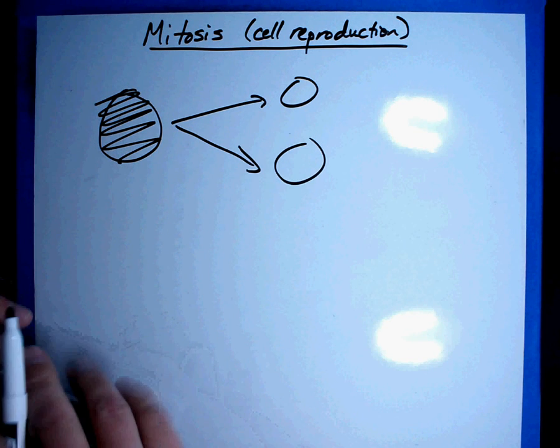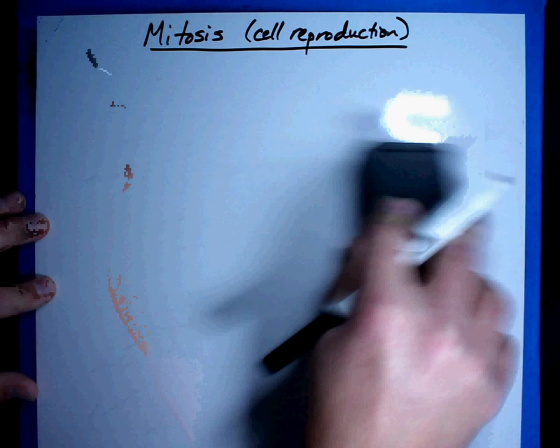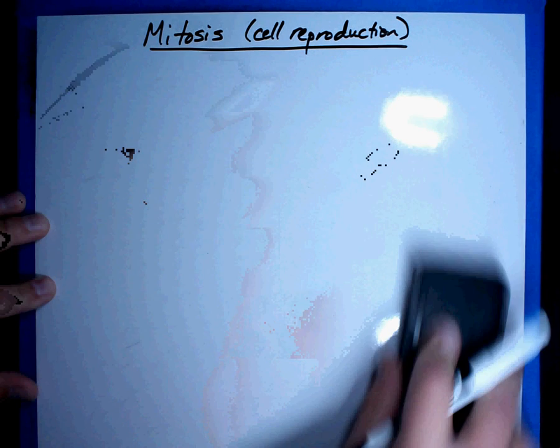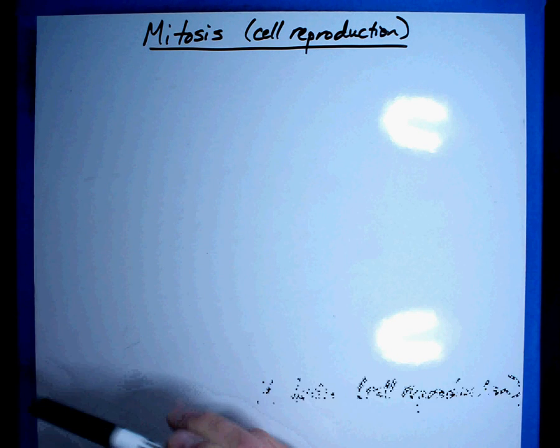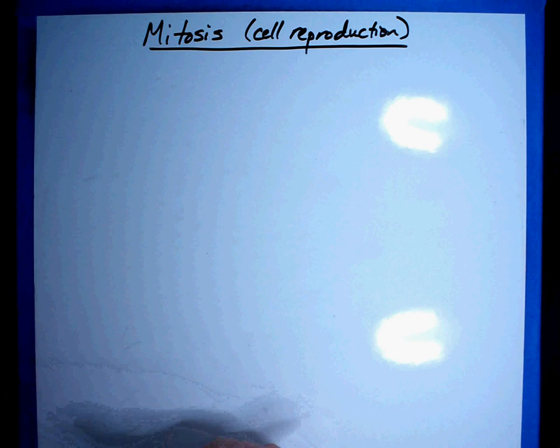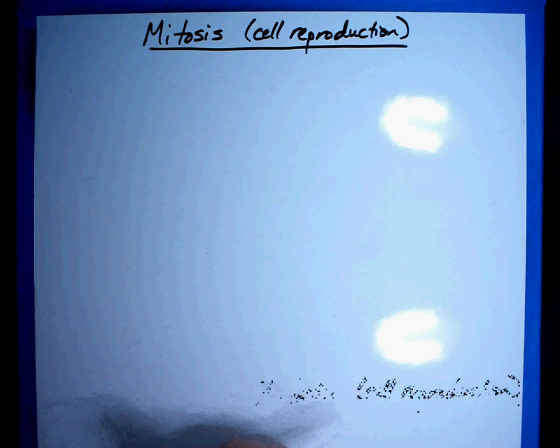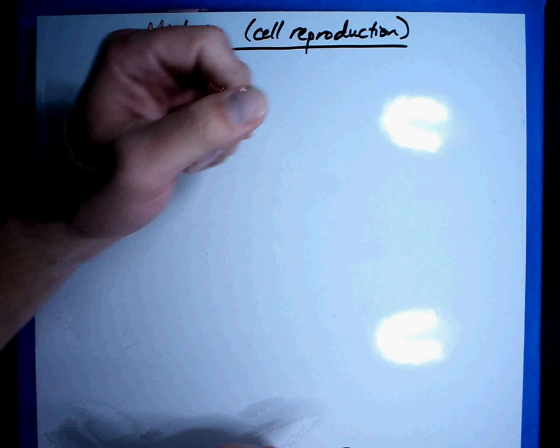Sometimes cells are damaged, such as when we sit out in the sun, we damage our cells and our body has to fix those cells. Sometimes it's for growth, where as a baby is growing, it has to produce more and more cells so that it grows or sometimes there's actually an error.